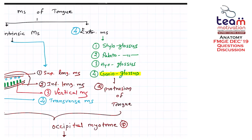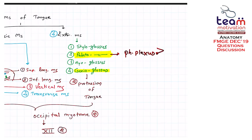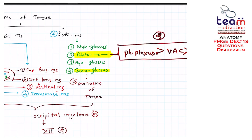The exception is palatoglossus, which is primarily a muscle of the palate and therefore receives innervation from the pharyngeal plexus. If not given as an option, you can mark the vagoaccessory complex, or if that is also not given, then the 10th cranial nerve.